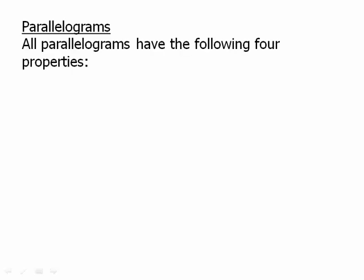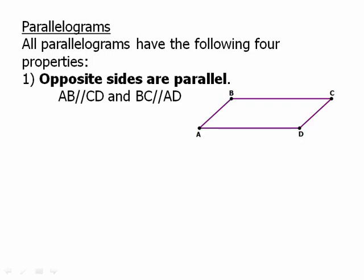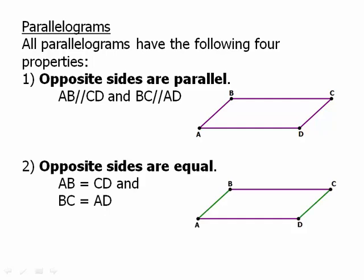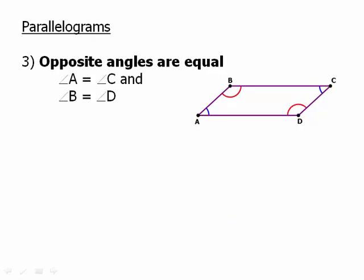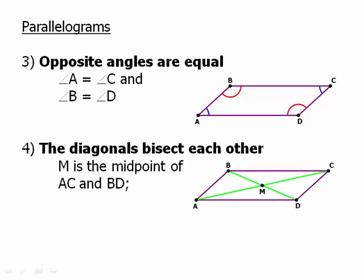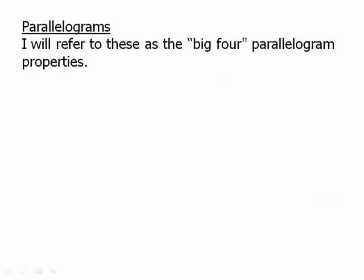Now we can start talking about the special quadrilaterals — the more elite quadrilaterals that are more common on the test. The parallelogram. All parallelograms have the following four properties. Property one: opposite sides are parallel — this is the definition of a parallelogram, so AB is parallel to CD, and AD is parallel to BC. Property two: opposite sides are equal, so AB equals CD, and BC equals AD. Property three: opposite angles are equal, so the red angles are equal and the blue angles are equal. Property four: the diagonals bisect each other, so their point of intersection M is the midpoint of each diagonal — AM equals MC, and BM equals MD. Those four properties are really important — I'll refer to those as the big four parallelogram properties.